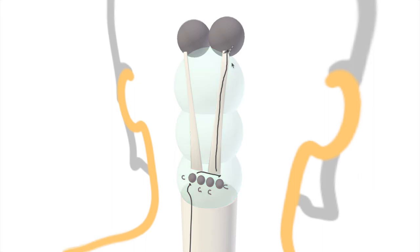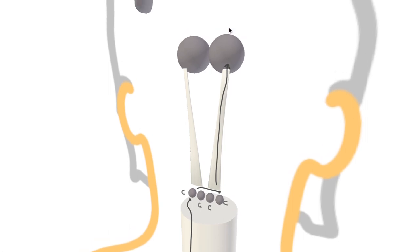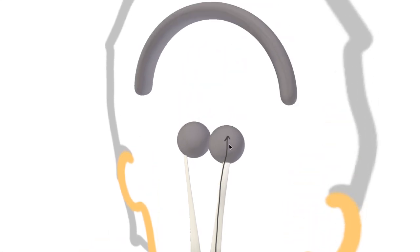And the cell body of our third order neuron is again in the thalamus. And this is all revision now, the third order neuron heads from there out to the sensory cortex.